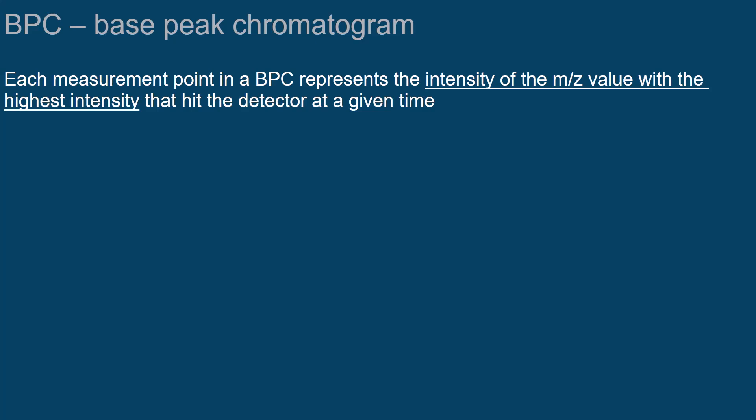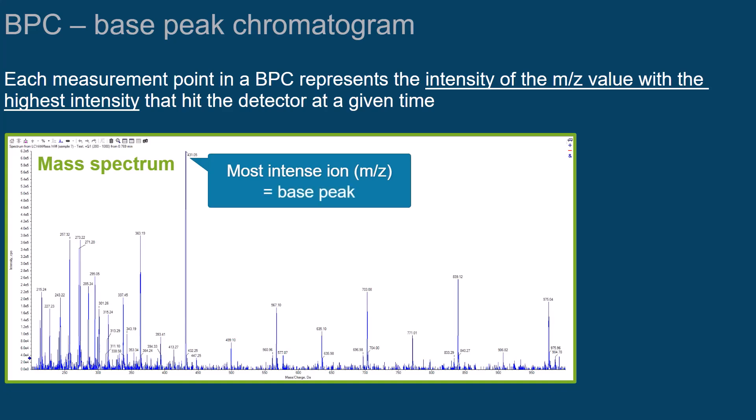The base peak chromatogram monitors only the intensity of the M over Z value with the highest intensity that hit the detector at a given time. Remember, the most intense ion is called the base peak.